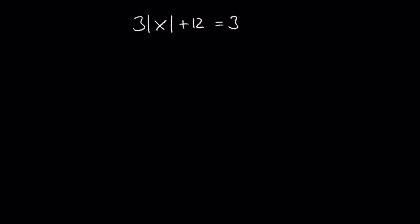Let's move on to the next example: solve 3 times the absolute value of x plus 12 equals 3. After subtracting 12 and dividing by 3 on both sides, we have the absolute value of x equals negative 3. As we know, the absolute value of a number is never negative, so this equation has no solution. Hence, the solution set is empty. Remember, no matter how complex the expression between the absolute value bars is, if it's equal to a negative number, the equation has no solution.